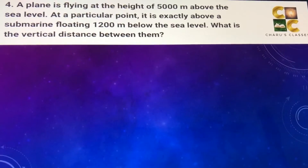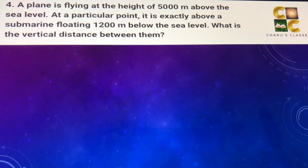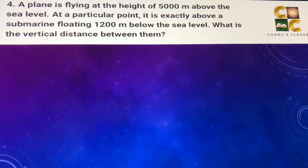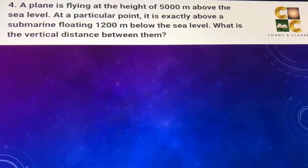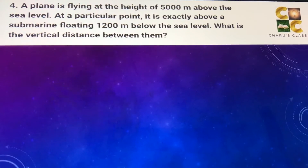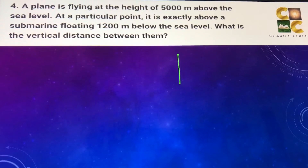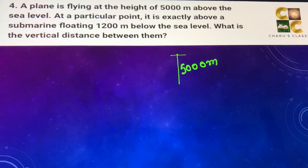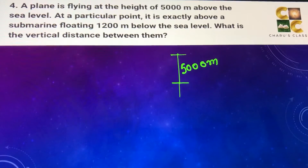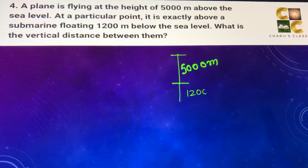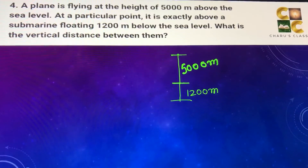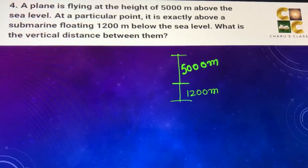Question number 4: A plane is flying at a height of 5000 meters above sea level. At a particular point it is exactly above a submarine floating 1200 meters below sea level. This is the height of the plane above sea level, and the submarine is 1200 meters below sea level. What is the vertical distance between them?